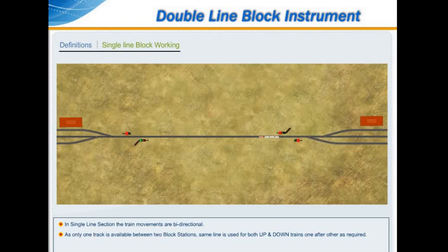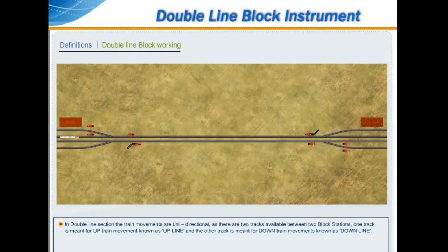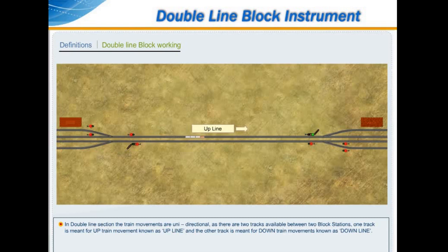On a double line section, the train movements are unidirectional. As there are two tracks available between two block stations, one track is meant for up train movement known as the up line, and the other track is meant for down train movement known as the down line.